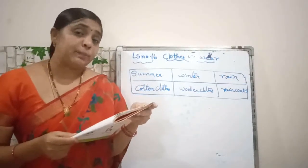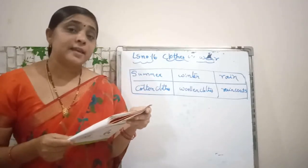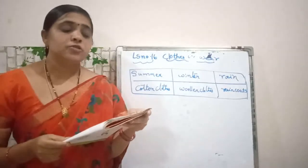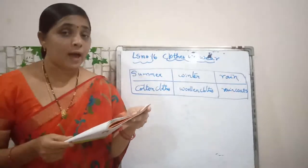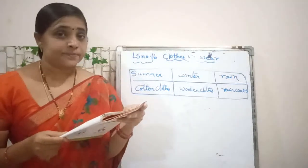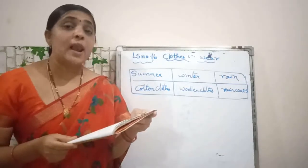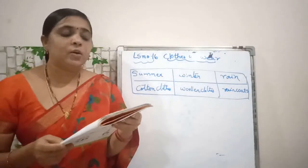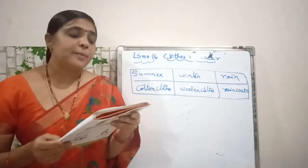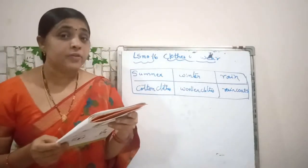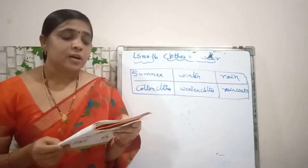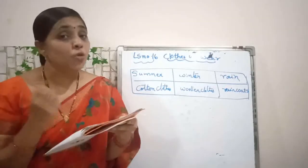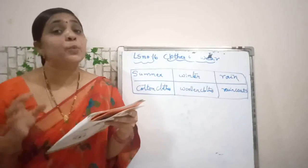While sleeping — W-H-I-L-E, S-L-E-E-P-I-N-G — we need soft and loose night clothes to sleep well. For school we need a well-ironed — I-R-O-N-E-D — and clean school uniform. Similarly, the clothes we wear should be suitable for the weather. In summer we wear thin cotton clothes. Cotton allows air to pass through it and soaks the sweat, so cotton clothes keep you cool in summer.